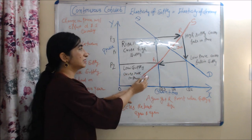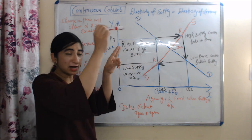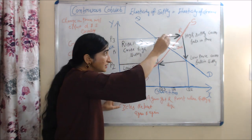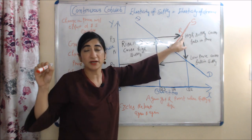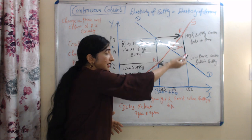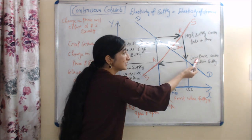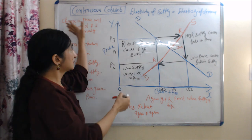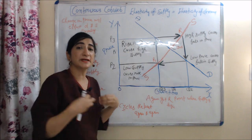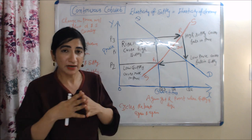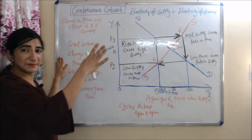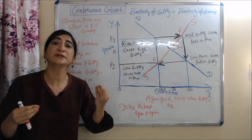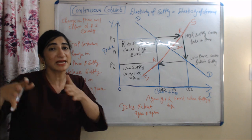This low supply will cause a rise in price — now we have a higher price P3. And this rise in price will cause higher supply, and then we again reach the point where our supply is higher, and this cycle will start again. High supply causes a fall in price, low price causes a fall in supply, and low supply causes a rise in price. In the case of continuous cobweb, this cycle will repeat again and again — that's why it's called continuous cobweb. Most importantly, there is a gap between the change in price and change in supply, because supply is affected by the previous year's price, not the current year's price. That's why there is a time lag.